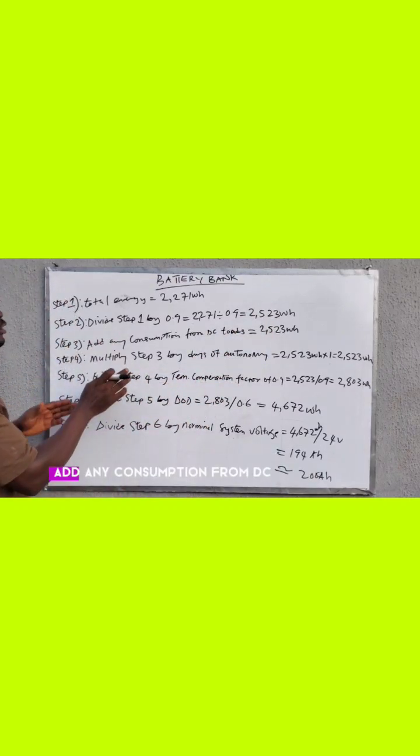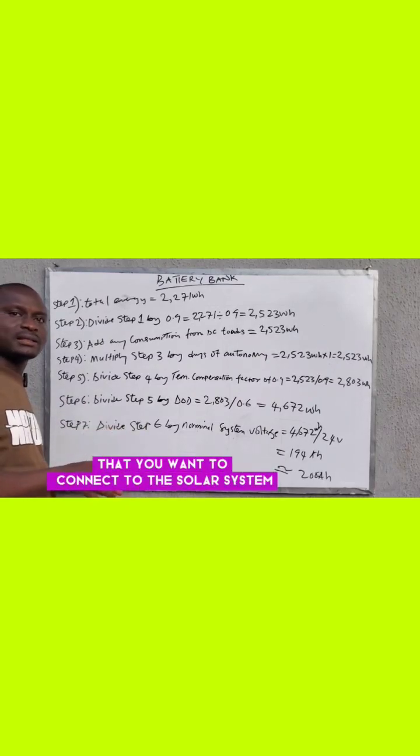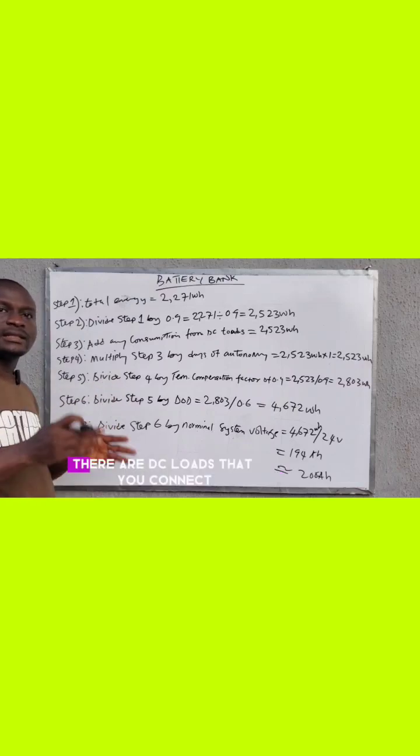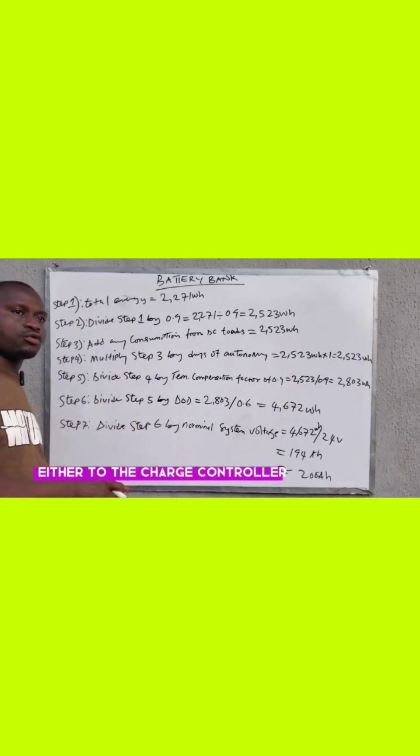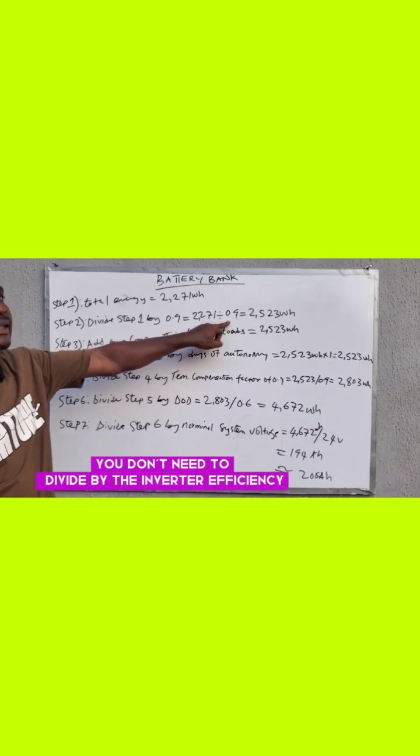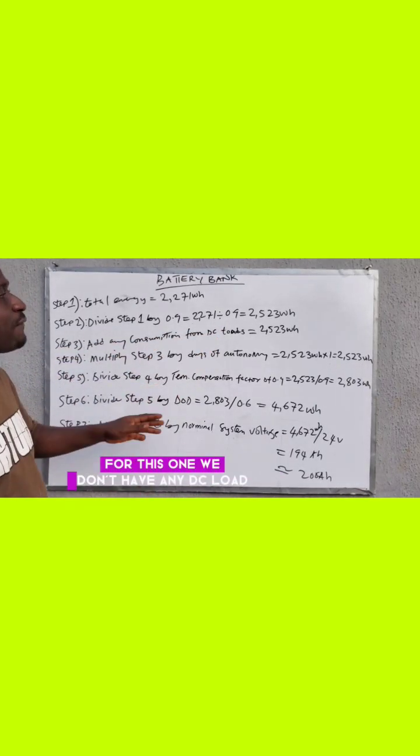Step three: add any consumption from DC loads. Now if you have DC loads that you want to connect to the solar system, you know the DC loads aren't connected directly to your inverter. There are DC loads that you connect either to the charge controller or directly to your battery bank. So you don't need to divide by the inverter efficiency because you're not connecting them to the inverter. For this one, we don't have any DC loads.